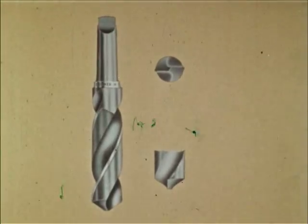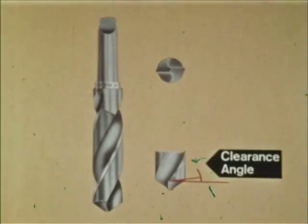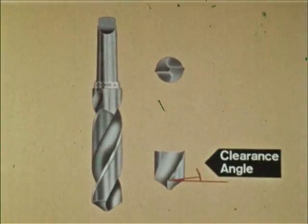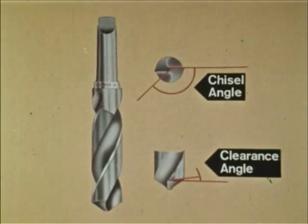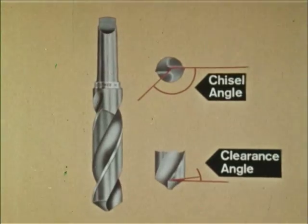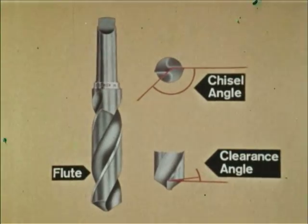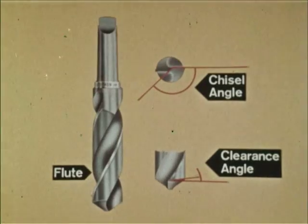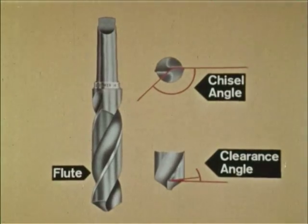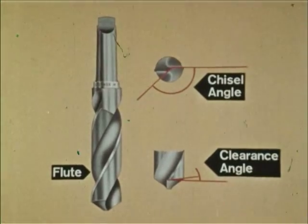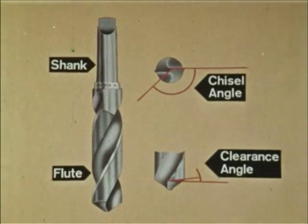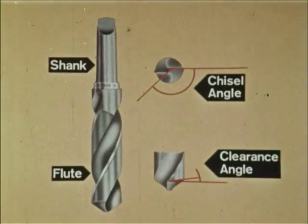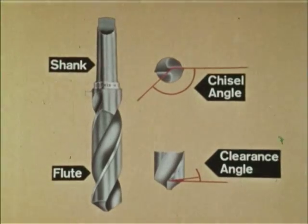The cutting is done by the drill point, and the angles of clearance behind the cutting lips are critical. The chisel angle is important, as the action of the chisel will determine the accuracy of the hole. The flutes carry the waste material clear of the cutting edge and also allow the passage of coolant to the point. The shank makes firm contact with the socket of the machine, providing the only source of drive, commonly known as friction drive.